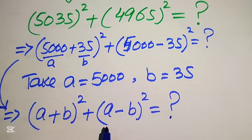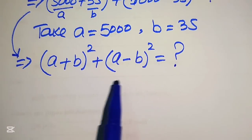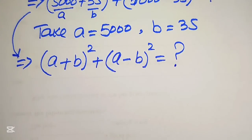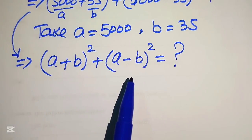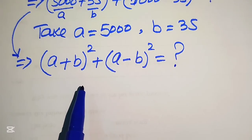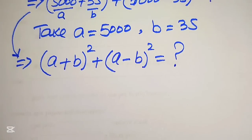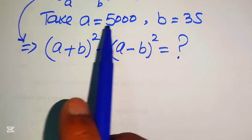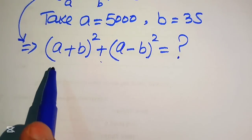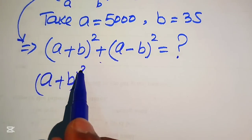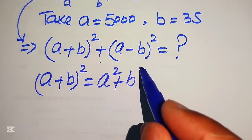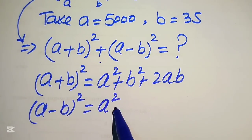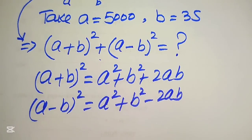To find this value we use the direct formulas. I recommend deriving them carefully to avoid mistakes. The formula for (a+b)² equals a² + b² + 2ab. Similarly, (a−b)² equals a² + b² − 2ab.